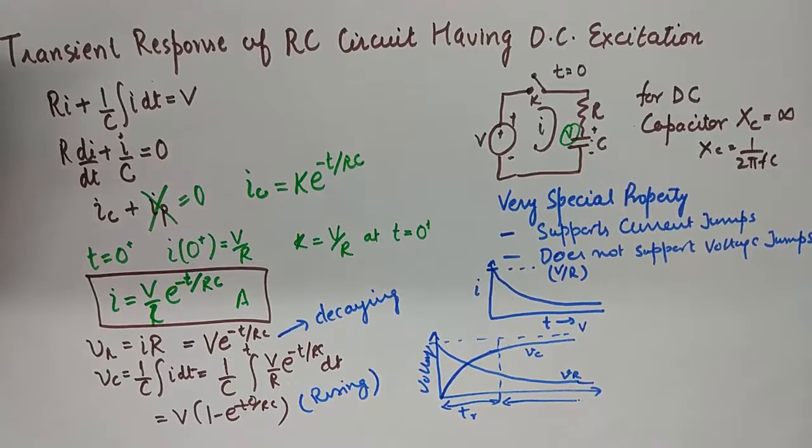And again it is very important to understand that the capacitor will rise to its 67% of its value very very quickly. And that is known as the time constant of the capacitor. And we can surely find it by substituting time t equivalent to 1/RC.